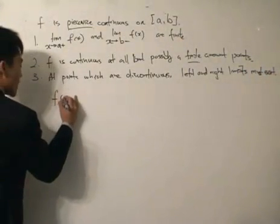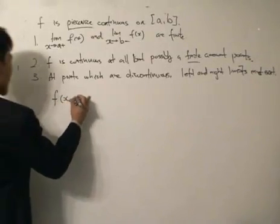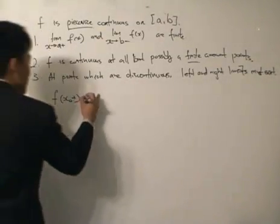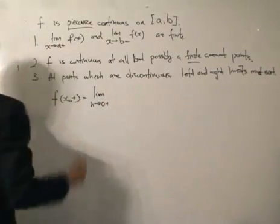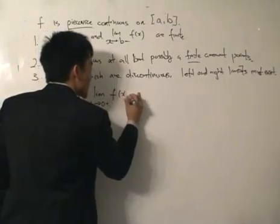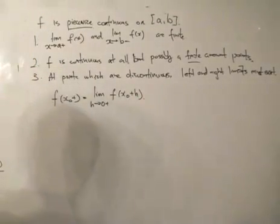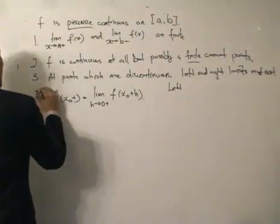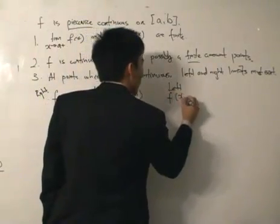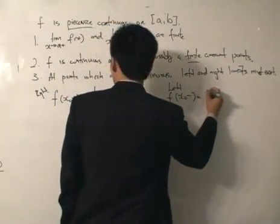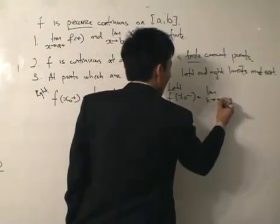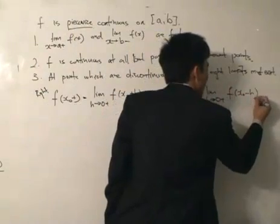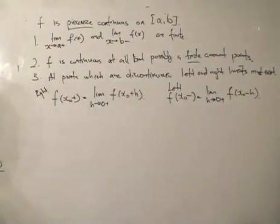The right limit, which we denote at a point x₀ with a plus, means we're approaching the limit from the right side. It equals the limit as h tends toward zero from the positive side of f(x₀ + h). That is the definition of the right limit. The left limit — approaching from the left — equals the limit as h tends toward zero from the positive side of f(x₀ − h). These definitions can be found in calculus textbooks.